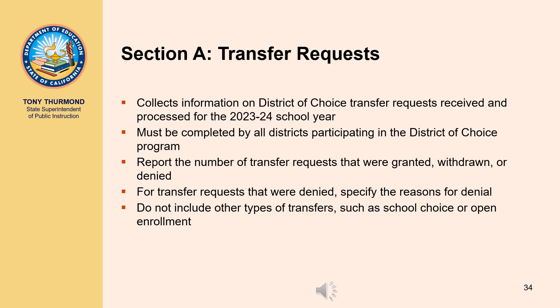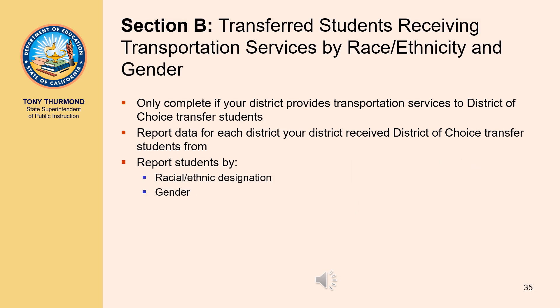This section collects information on district of choice transfer requests received and in process for the current school year. All districts participating in the district of choice program must complete this section. Districts are required to report the number of transfer requests that were granted, withdrawn, or denied. If any transfer requests were denied, the reasons for the denial must also be reported by specifying all of the reasons for denial that apply. Other types of transfer requests such as school choice or open enrollment are not to be included in these transfer request counts.